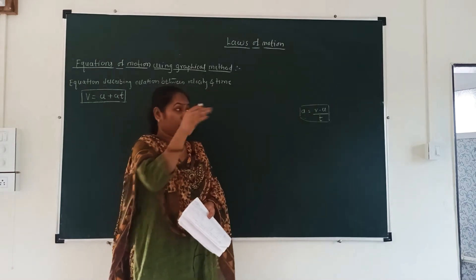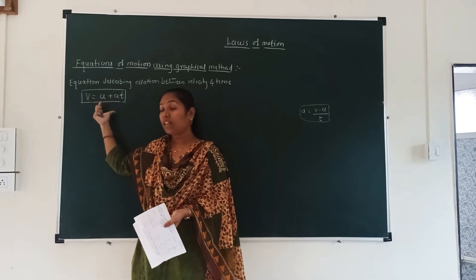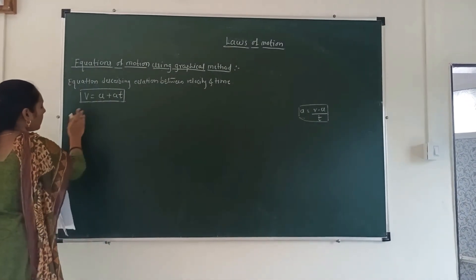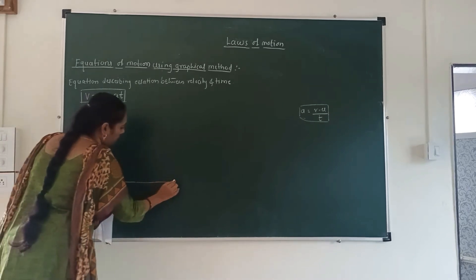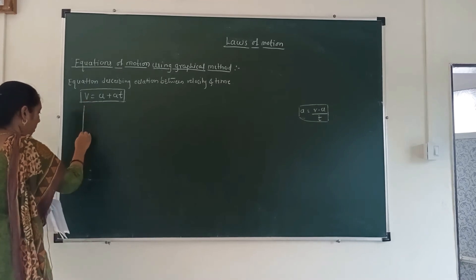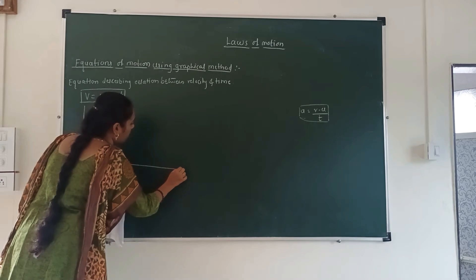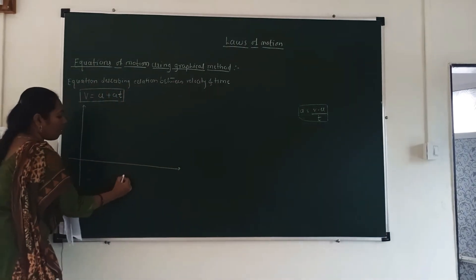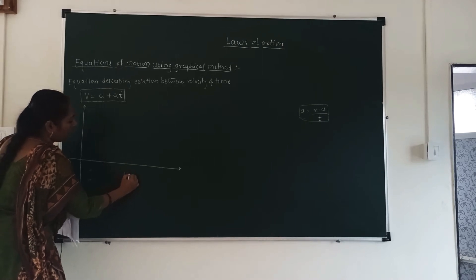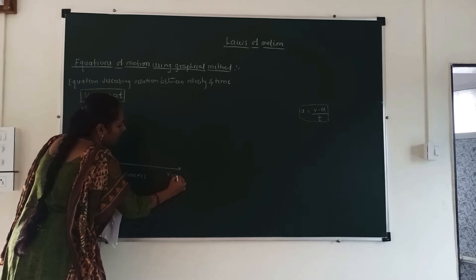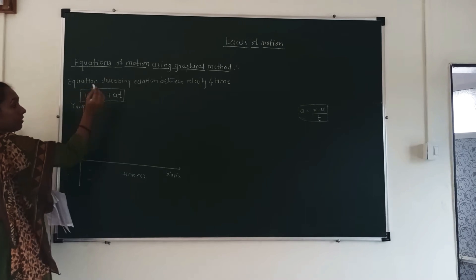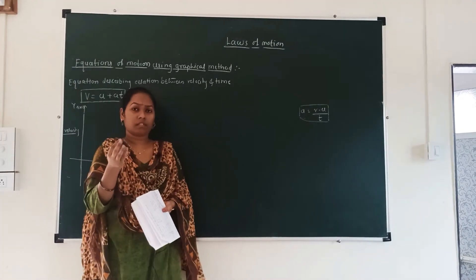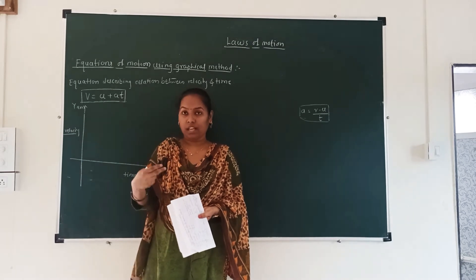Now we will learn how Newton obtained this equation. For that, I draw a graph, and on the basis of this graph we will see how the equation is derived. This is the velocity-time graph. On the x-axis I write time in seconds, and on the y-axis I write velocity.